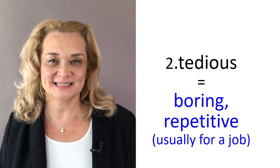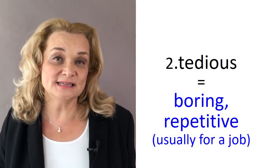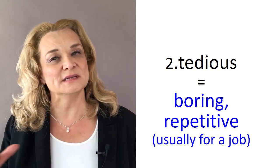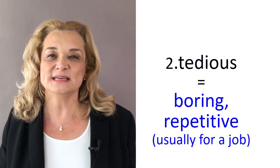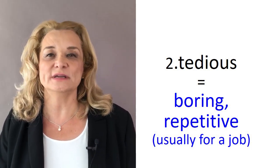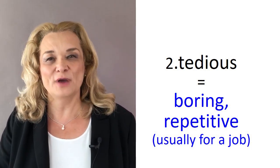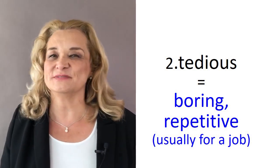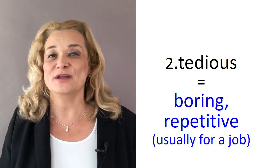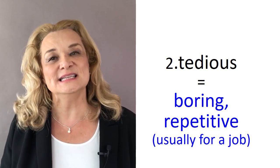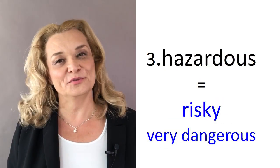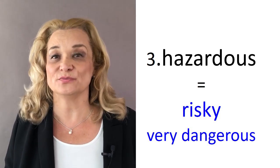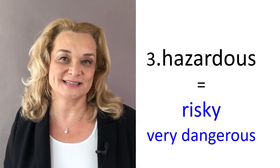Number two: tedious. Tedious is similar to monotonous because it's something that's boring, but tedious usually is related to a job. If you have to repeat something over and over again and it's very slow and very boring and you're not interested in it, that's a tedious job. Number three: hazardous. Hazardous means risky or very dangerous.